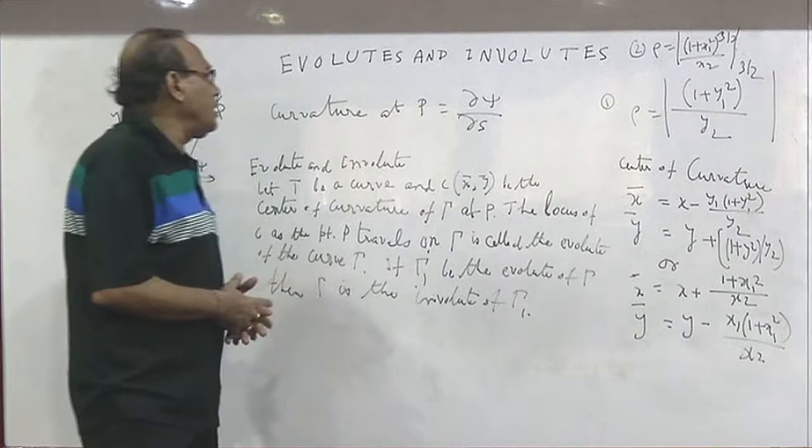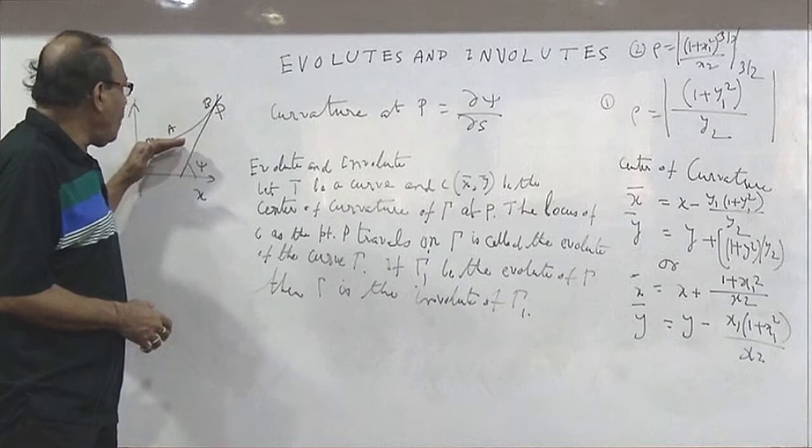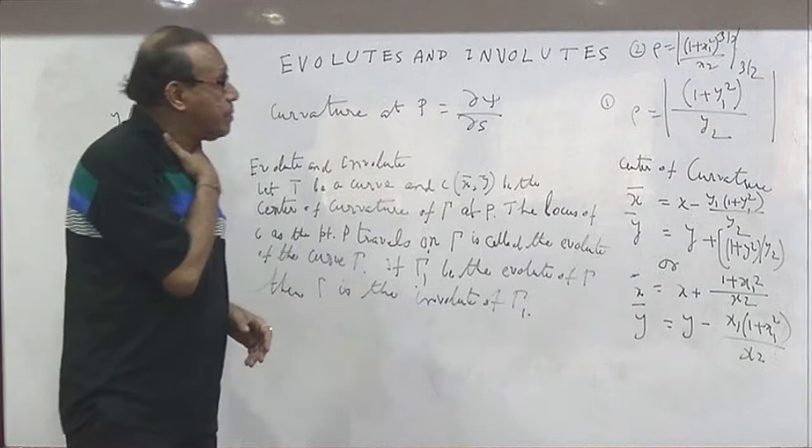That means I am going to see how the angle changes as the arc length S changes. Now, in this chapter there are two cardinal concepts. Concept number one is radius of curvature.